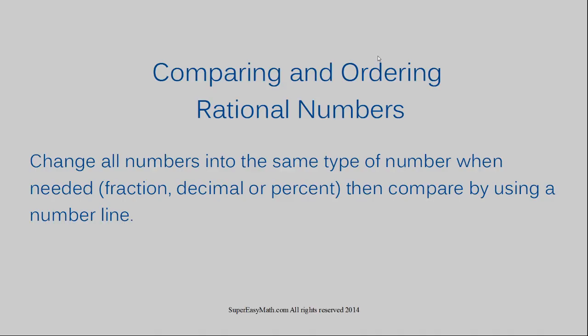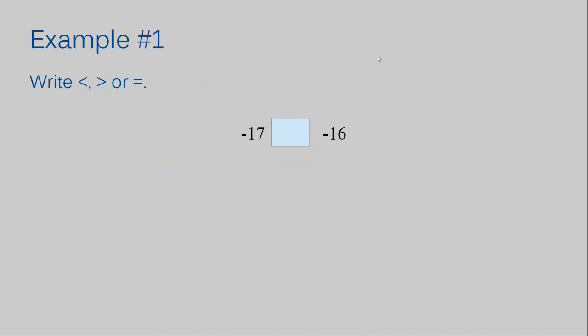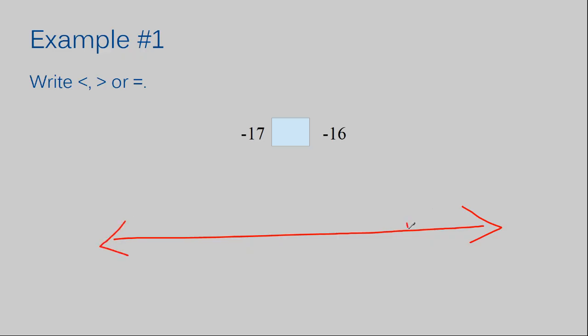Let's move to example number one. For this example, they want us to write a less than, greater than, or equal to sign. I have negative 17 and I have negative 16. If you remember what your number line looks like, I'll draw one in right here. I'm going to draw my arrows because numbers never end — they keep going.